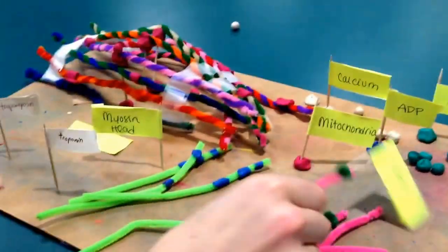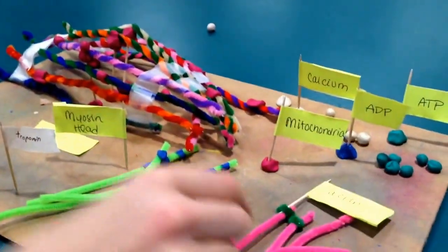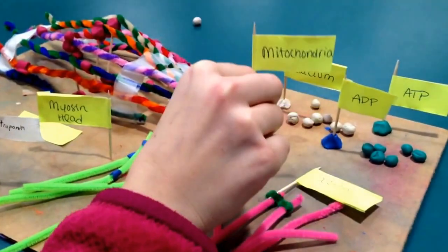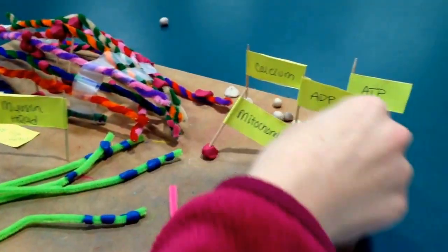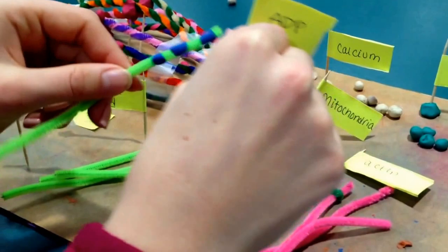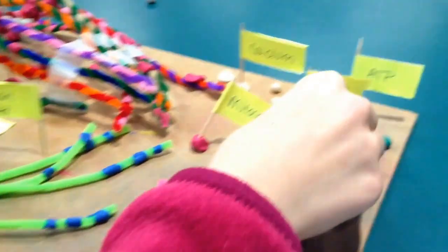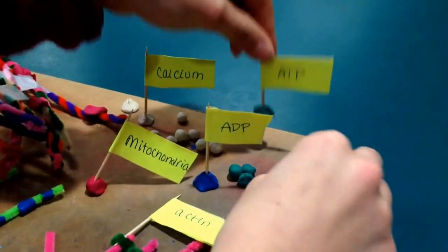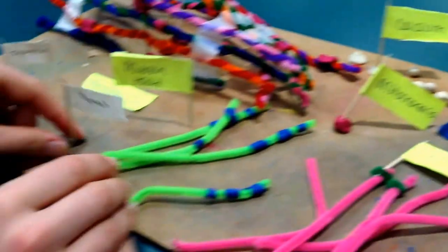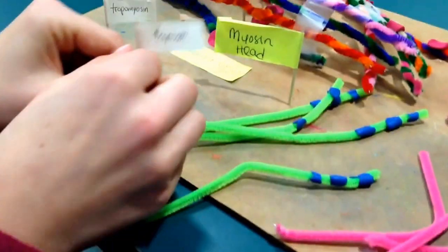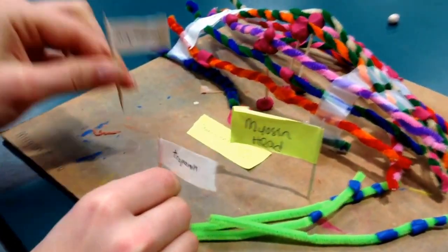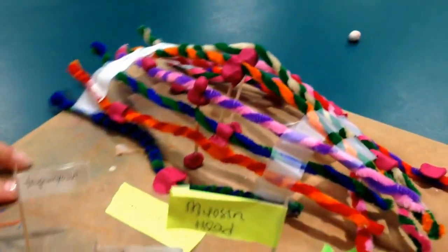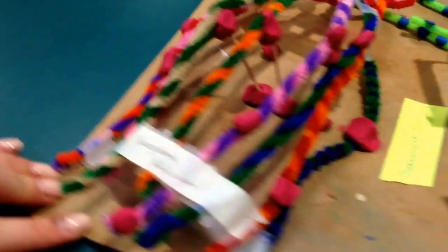In our model, we will be using an actin head, mitochondria, ADP which is attached to the myosin heads, calcium, ATP, troponin, tropomyosin, our sarcomere, and our sarcoplasmic reticulum.